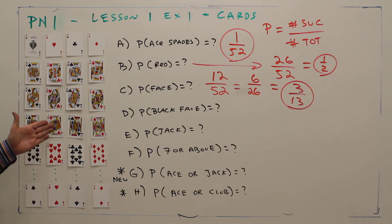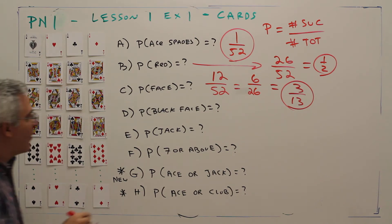Part D: probability of a black face card. So the jack, queen, king of spades, and the jack, queen, king of clubs. There's 6 of those.